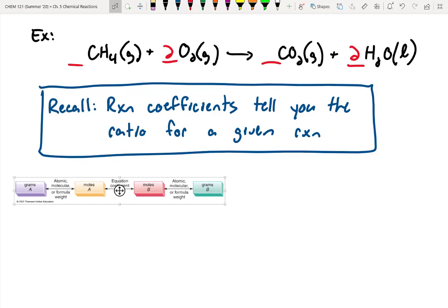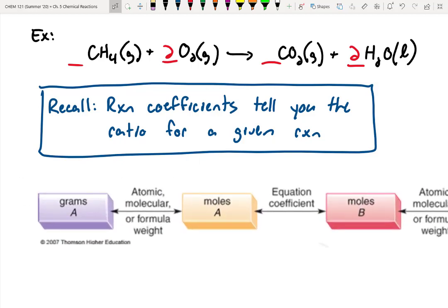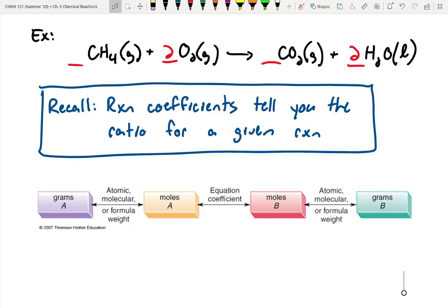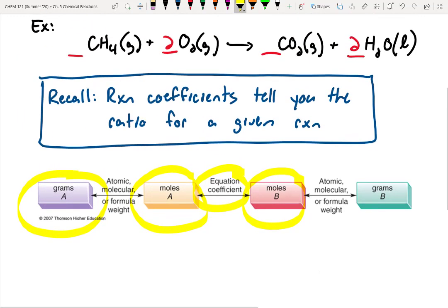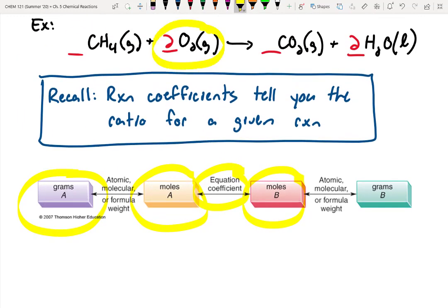I'm going to copy and paste this flowchart over. Here's the type of flowchart I typically like to start with. If you're given the mass of something, you can convert to the moles by using the atomic or molecular weight. Then the reaction coefficient can convert you from moles of one thing to moles of another thing. For example, if I put in two moles of oxygen, I should get only one mole of CO2. That's a two-to-one ratio. Once we have the moles of B, we can get to grams of B by using molecular weights.